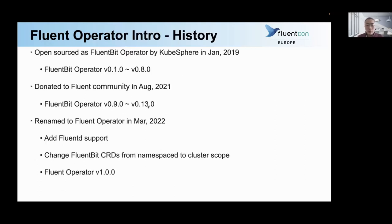This project was previously known as FluentBit Operator and it was created and open sourced by the KubeSphere community in January 2019. We have released about eight releases since then in the KubeSphere community. In August 2021, after some discussion with the Fluent community, we donated this project to the Fluent organization. Since then we have released about five versions and in the last couple of months we have made some significant changes to this project.